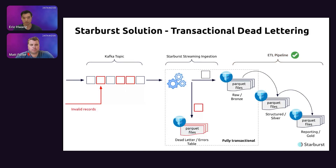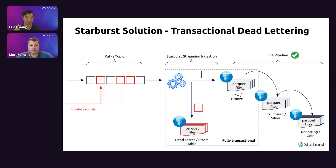At Starburst, we take bad messages that can't be parsed and inject them into a parallel dead letter table — also an Iceberg table — that is jointly transactional with the loaded table. These two tables move in lockstep so you can be assured there's never any duplication or data loss relative to the two tables. This is pretty unique compared to most systems we've surveyed.